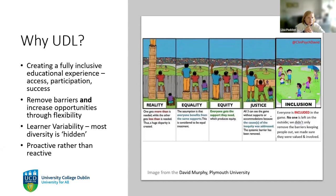You're probably all familiar with the cartoon looking at the difference between equality, equity, justice, and inclusion. This one is nice because it also has inclusion tagged on to the end. We know in reality that lots of people have more resources than others, and those who need them most quite often are the ones who don't have them. Justice is removing that barrier altogether, and inclusion means you're not just standing on the sidelines watching — you're actually in the game yourself.